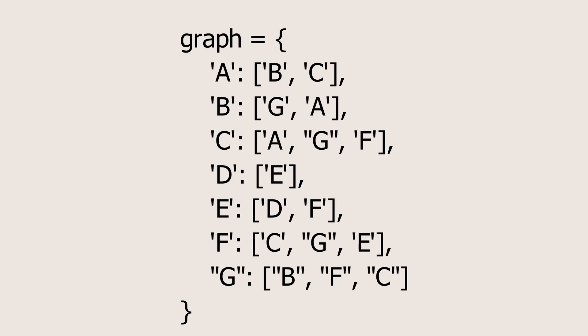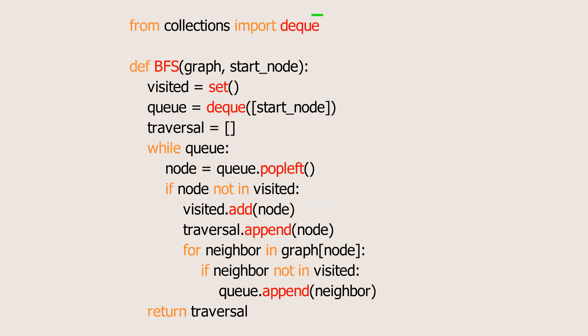Now, let's look at the code. First, this is how to store the graph in an adjacency list using Python dictionaries and lists. Next, we'll start by importing the Deque structure from Python's Collections module to use as our queue. Then, we define the BFS function, which takes the graph and the starting node as input parameters.